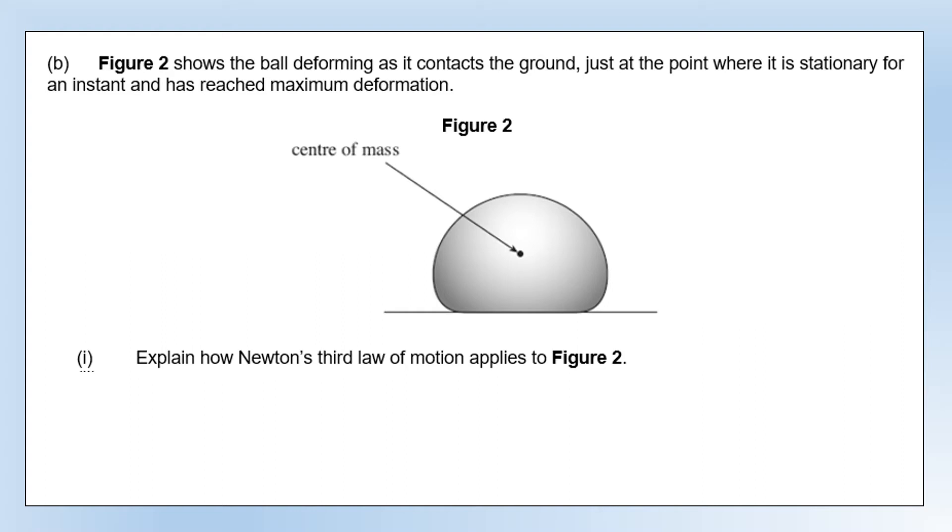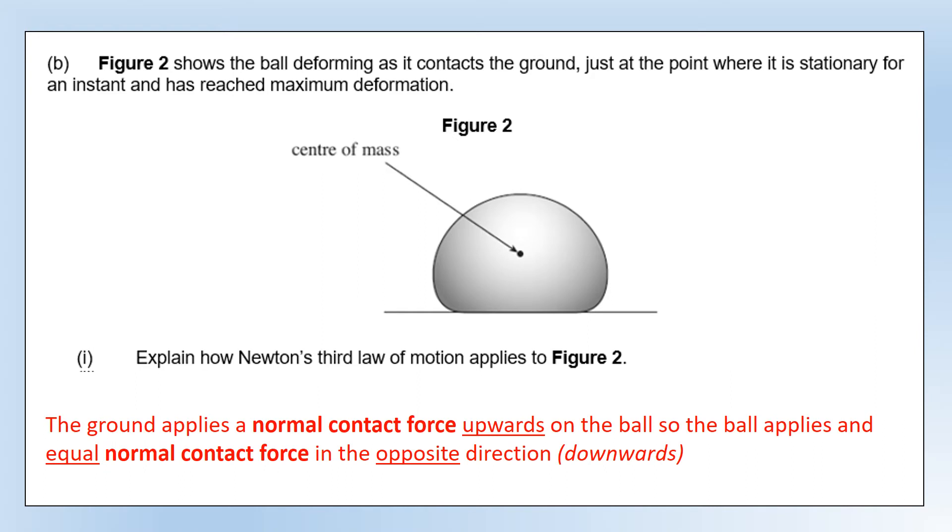Explain how Newton's third law of motion applies to figure two. We know the ground will be applying a normal contact force upwards on the ball—that's why the ball has stopped and deformed. Newton's third law tells us the ball is applying an equal normal contact force, the same type of force in the opposite direction, so in this case downwards on the ground.